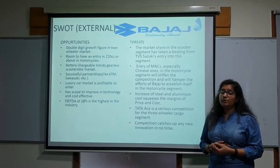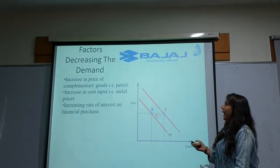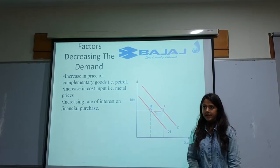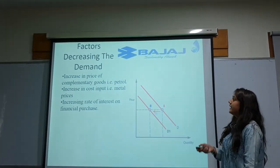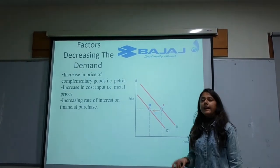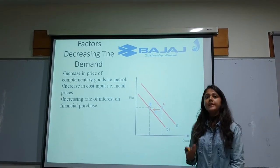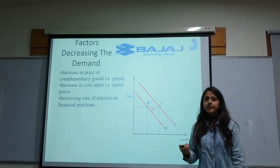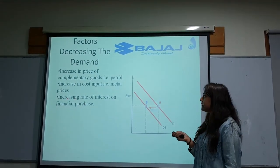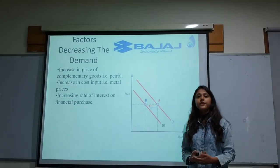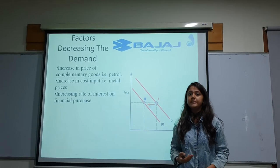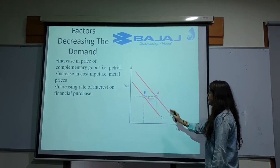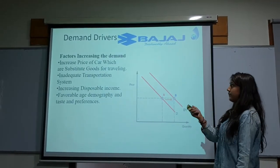I am Pragati. Now I will discuss the factors that are increasing and decreasing the demand. The factors decreasing demand are: first, increase in the price of complementary goods — that is petrol — if petrol prices increase, demand for automobiles will decrease. Second, increasing cost inputs such as metal prices — if metal prices increase, demand for automobiles decreases. Third, increasing rates of interest on financial purchases — as interest rates rise, it becomes more difficult for consumers to buy automobiles. This causes a leftward shift of the demand curve from D to D1.